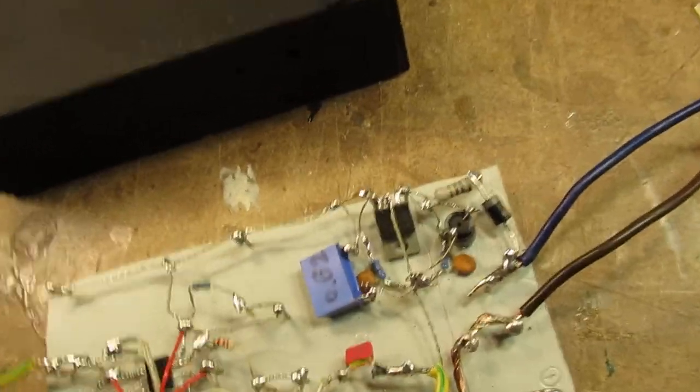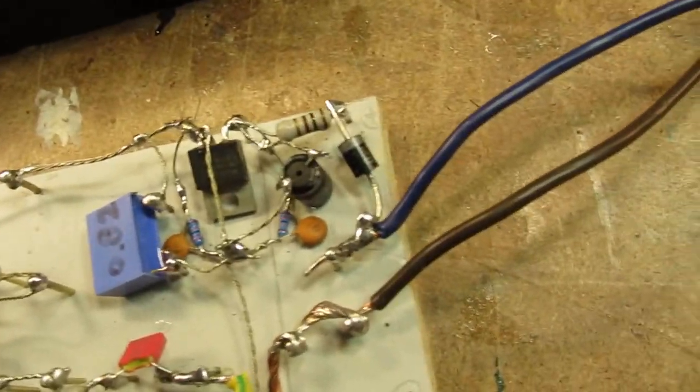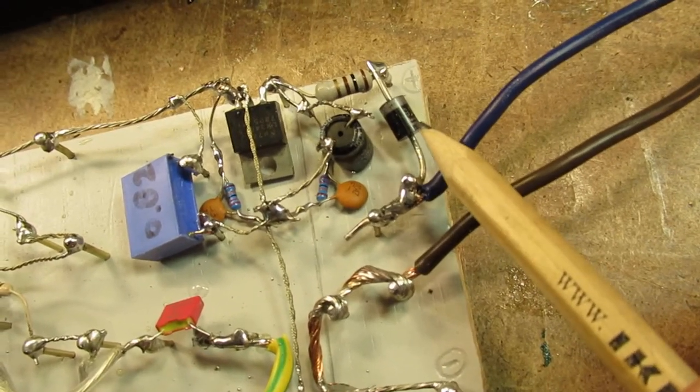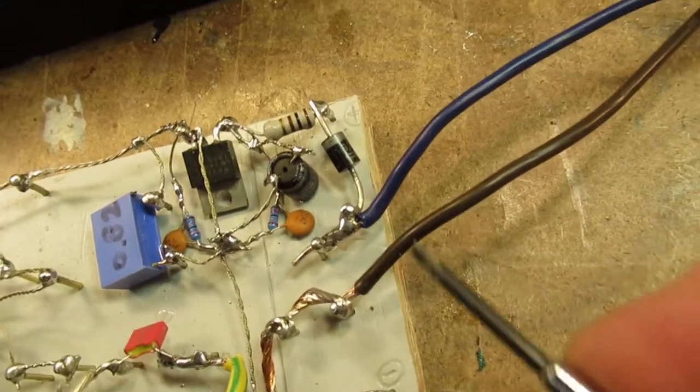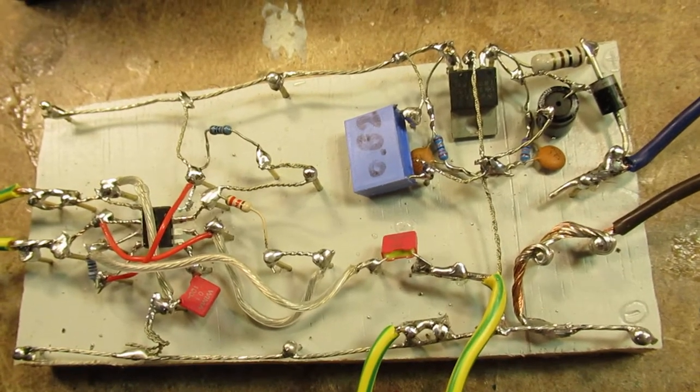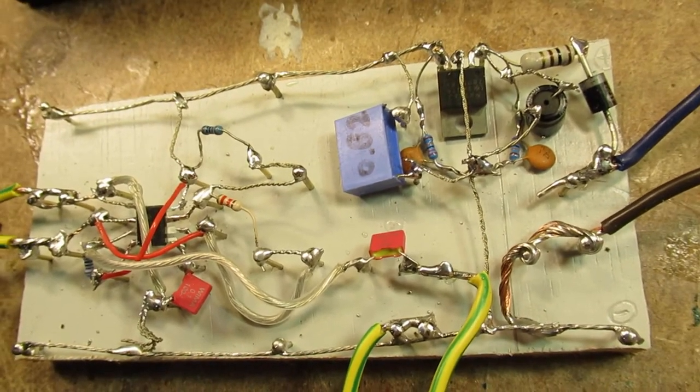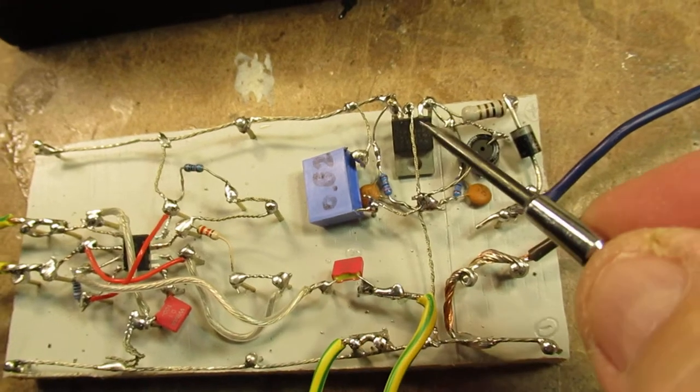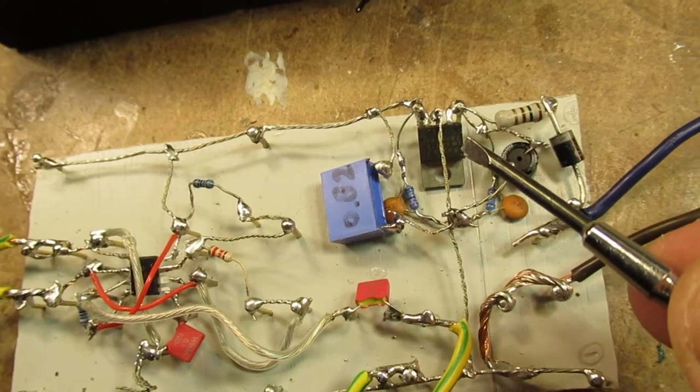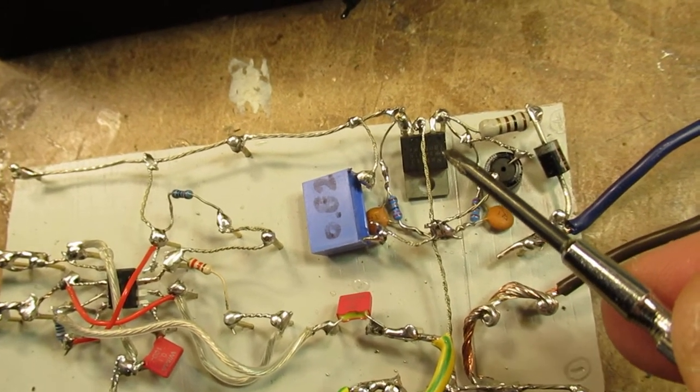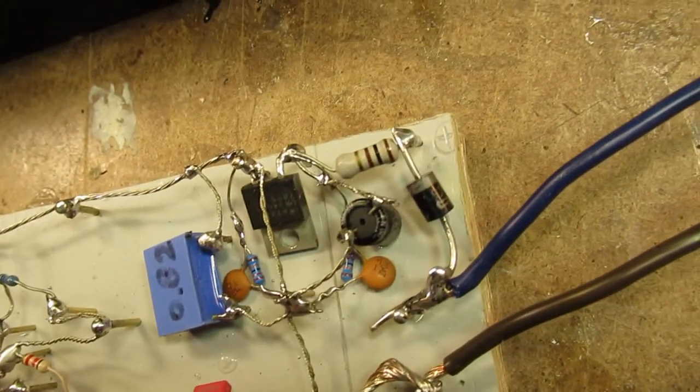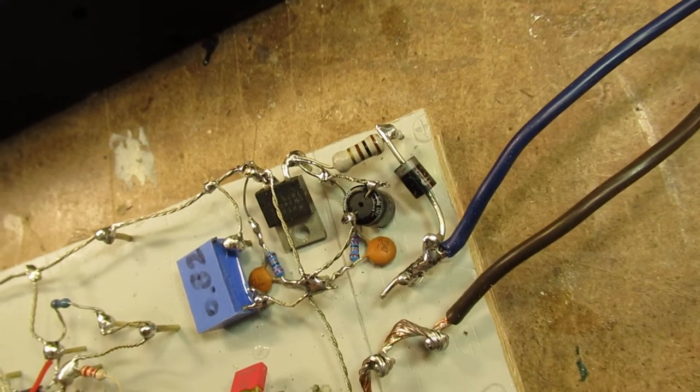And I've mounted here a diode. You can see it here, this diode. And it prevents that when you swap the positive and the negative, that the circuit is not destroyed by giving the voltage regulator a reverse voltage. But perhaps the 7805 also has that protection inside. I don't know that, but it's more or less extra.